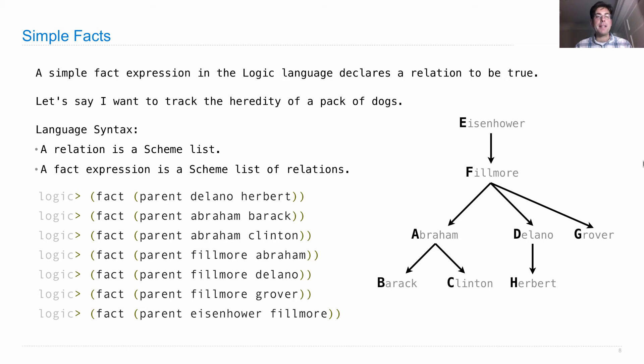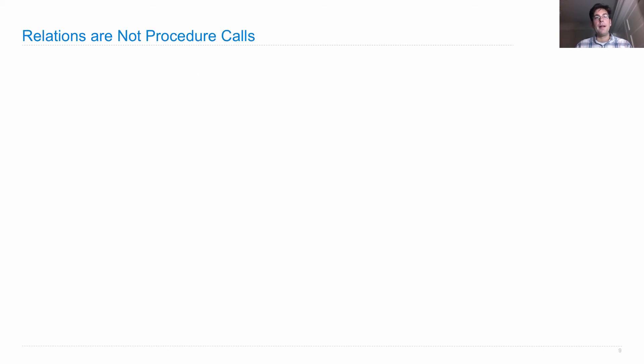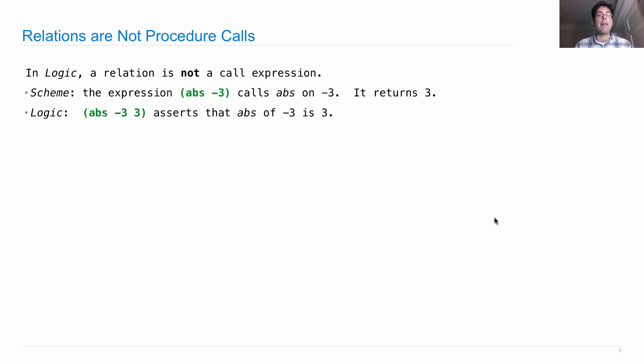Relations are not procedure calls. This is not Scheme, it's a new language. In Logic, a relation is not a call expression. In Scheme, you write things like 'abs -3' and that calls the absolute value computational procedure on -3 to give you back 3. But we're not going to do this anymore. Instead, in Logic you just state facts. You state there's an abs relationship between -3 and 3 - that is, the absolute value of -3 is 3. It's up to the interpreter to figure out how to process them.